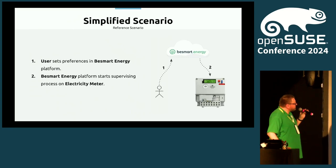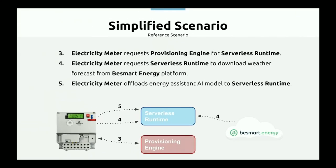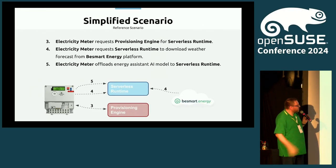That kicks off a process on the small devices. The meter goes to the provisioning engine, requests a serverless runtime, and starts downloading weather conditions — factoring in how much energy is needed for specific devices at home. Then it offloads an AI model to the serverless runtime.